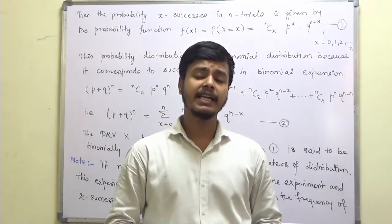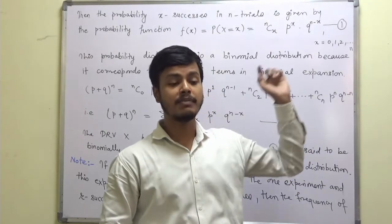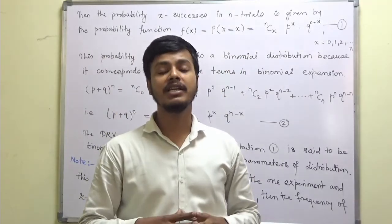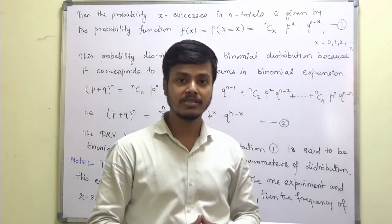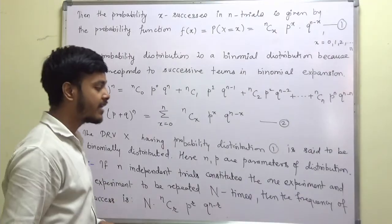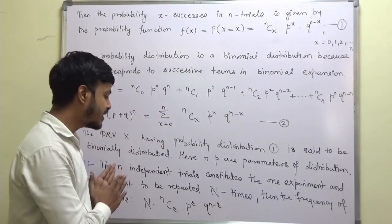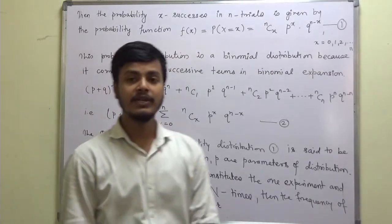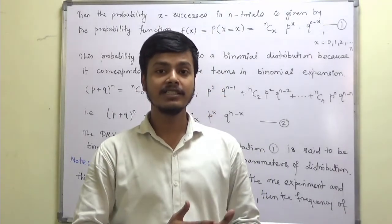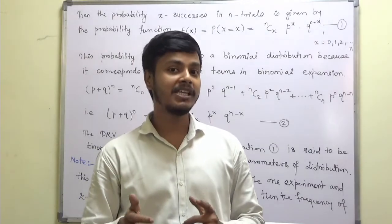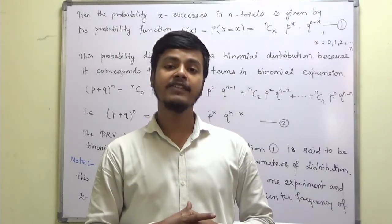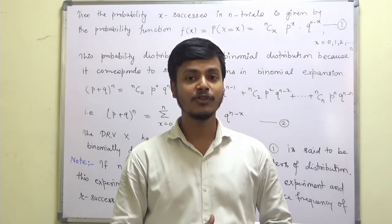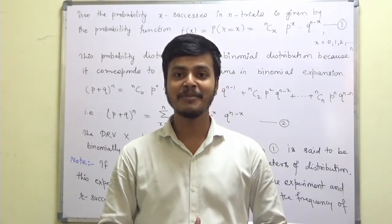The discrete random variable X given by this binomial distribution F of X is said to be binomially distributed, and N and P are the parameters. One note to remember: if N independent trials constitute one experiment and it is repeated N times, the frequency of successes will be N times F of X. That is what we have discussed here — a wonderful application of binomial distribution. In the very next class, we are going to take on the properties of binomial distribution. Thank you for watching this learning video and enjoy learning mathematics. Thank you.